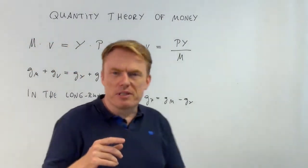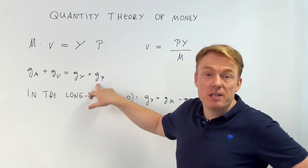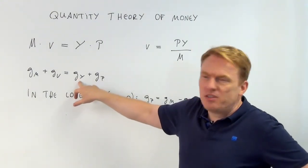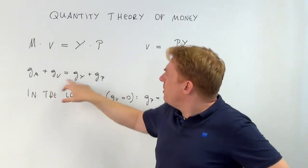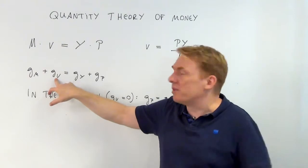Or, to put it differently, if you want to achieve 2% inflation rate, and in the long run the growth rate of velocity is zero, given the fact that this might be 3%...